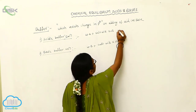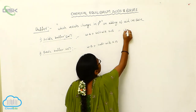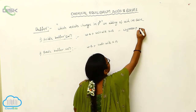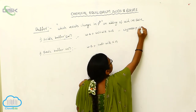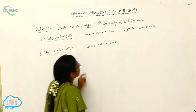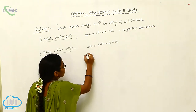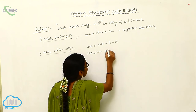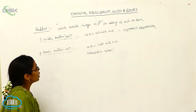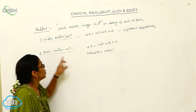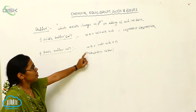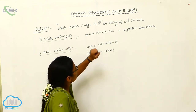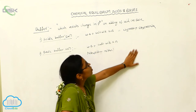For the acidic buffer, the example is: weak acid CH3COOH plus the salt with strong base, which is sodium acetate. For the basic buffer, the example is: weak base NH4OH plus salt with strong acid, which is NH4Cl. So the combination of ammonium hydroxide and ammonium chloride gives a basic buffer. Acetic acid plus sodium acetate gives an acidic buffer solution.